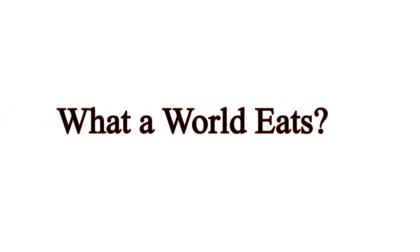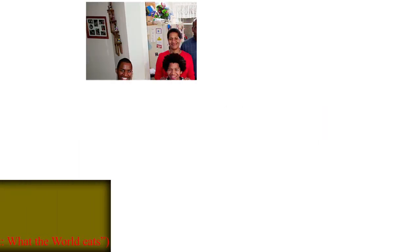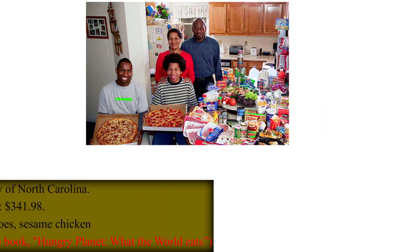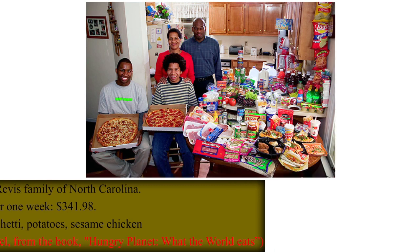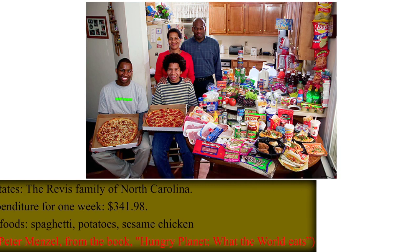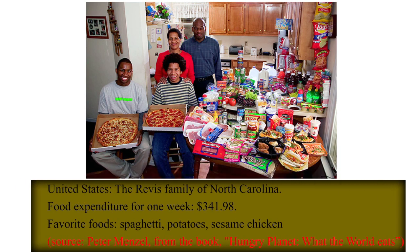What the world eats. United States — the Revis family of North Carolina. Food expenditure for one week: $341.98. Favorite foods: spaghetti, potatoes, sesame chicken.